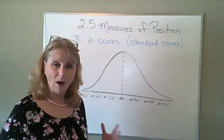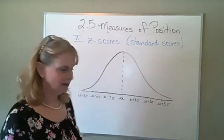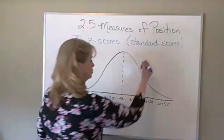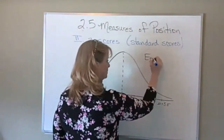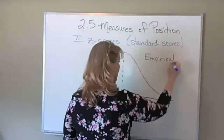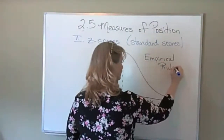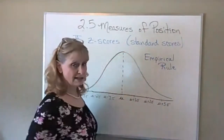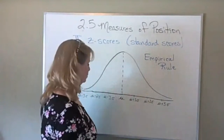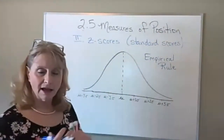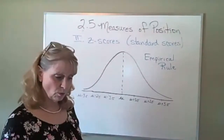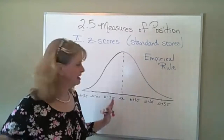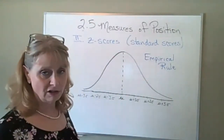Let me talk about what a z-score is. I'm going to refer back to this picture, which was the picture we drew for the empirical rule — we talked about this last time. The empirical rule says that if a data distribution has a bell shape, we expect a certain percentage to be within one standard deviation, 95% within two standard deviations, and 99.7% within three standard deviations.